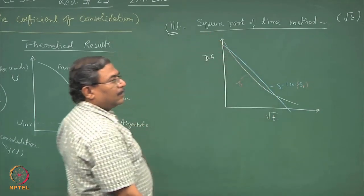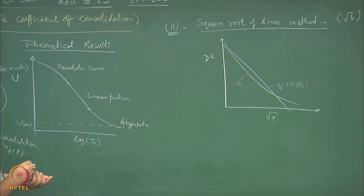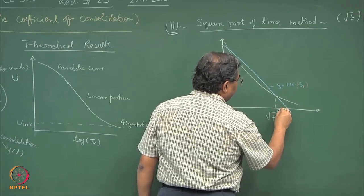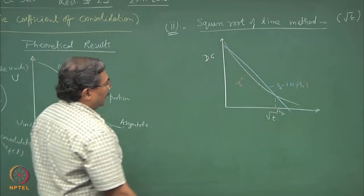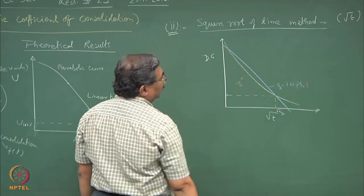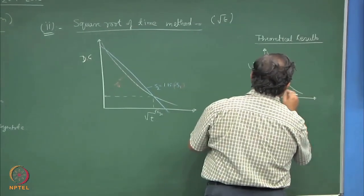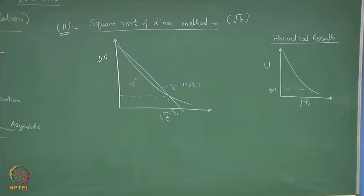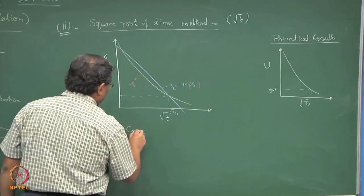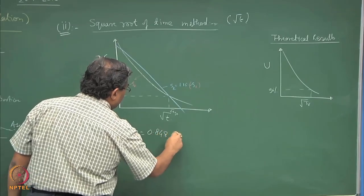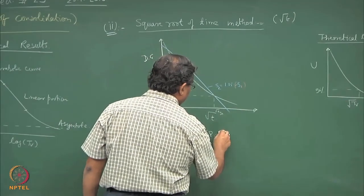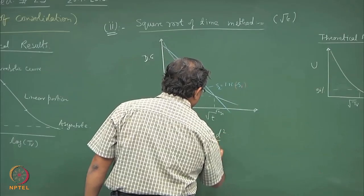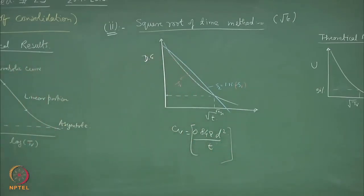From this point, draw a line with slope 15 percent more than s1. Wherever this cuts the experimental results, this gives you t_90. Corresponding to this dial gauge reading, the degree of consolidation is 90 percent. For 90 percent consolidation, cv equals 0.848 times d-squared upon t. These are the two methods from which you can get the cv value.